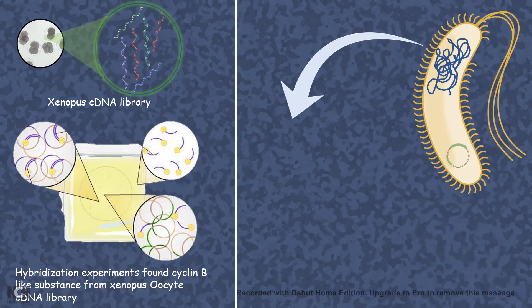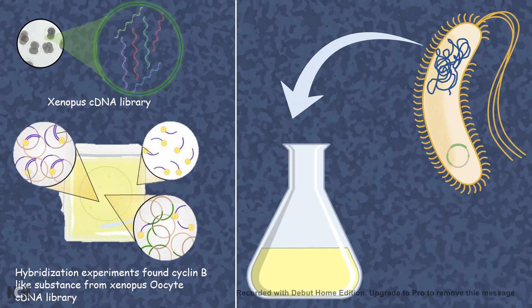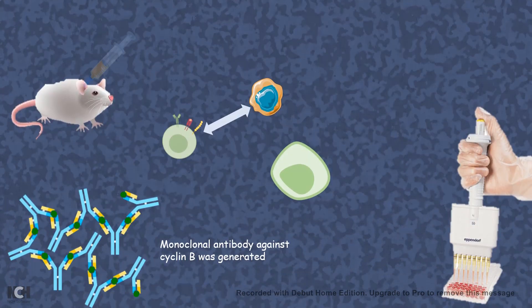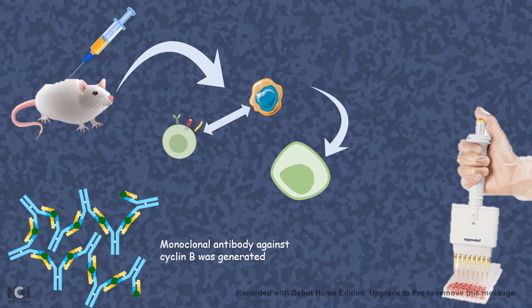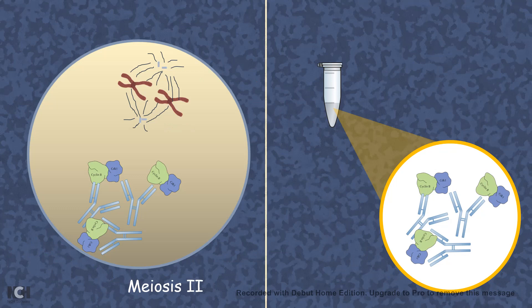Now, in E. coli, the cDNA of the Xenopus oocyte was cloned and a protein was bulk purified. Then it was actually injected in mice to perform hybridoma and produce a monoclonal antibody.